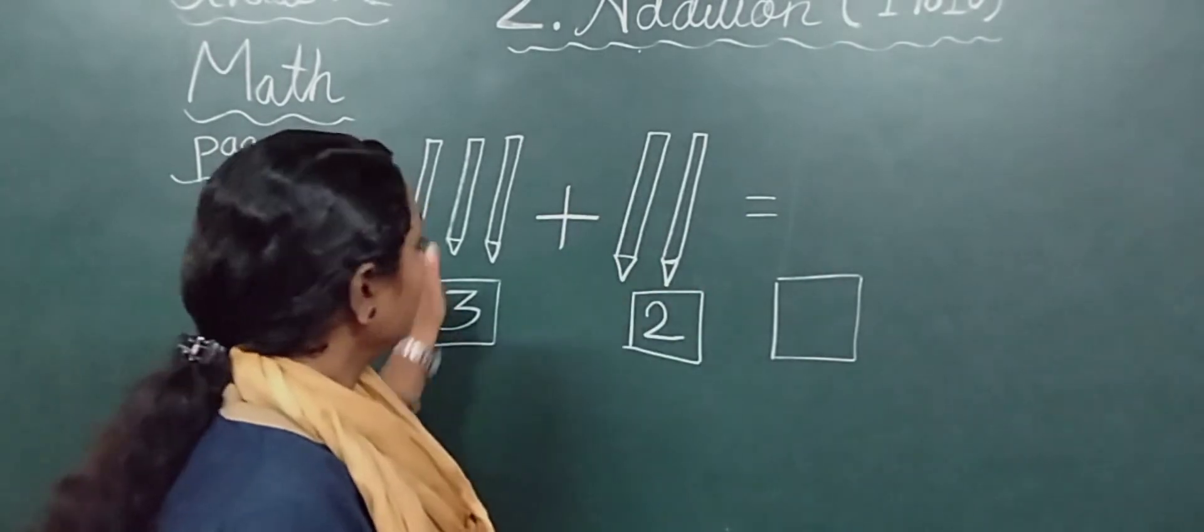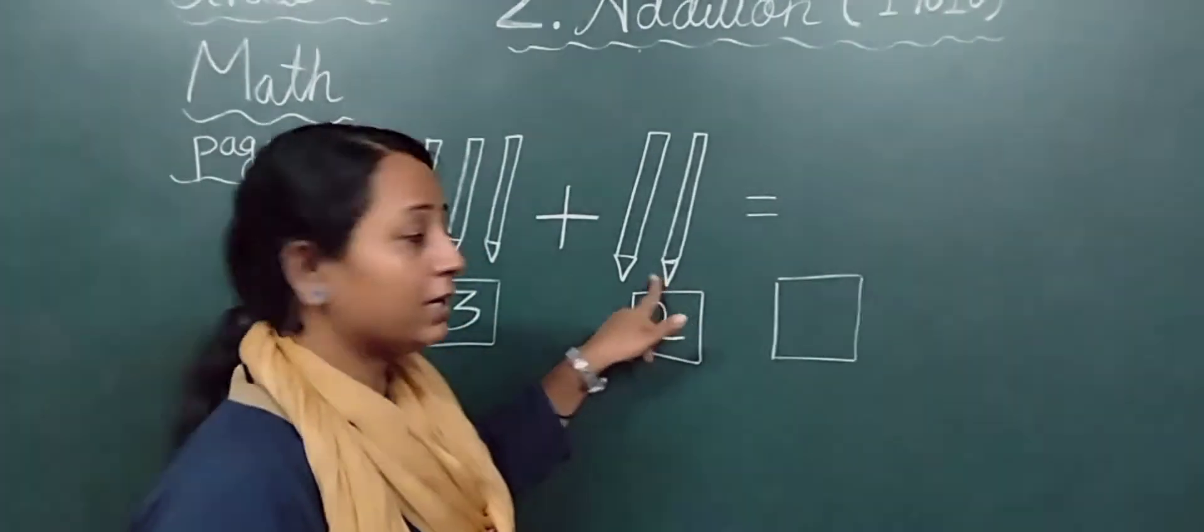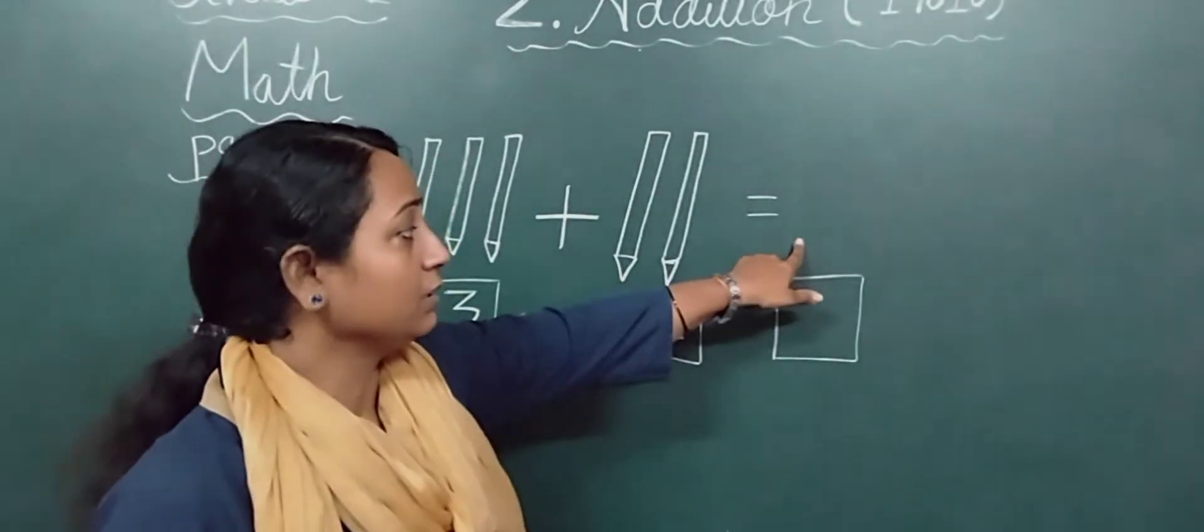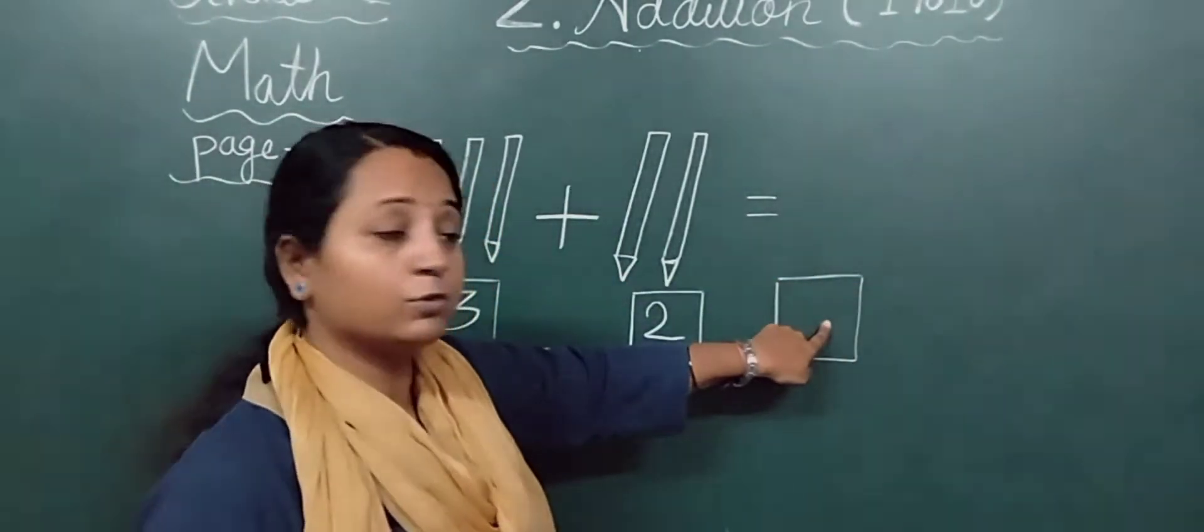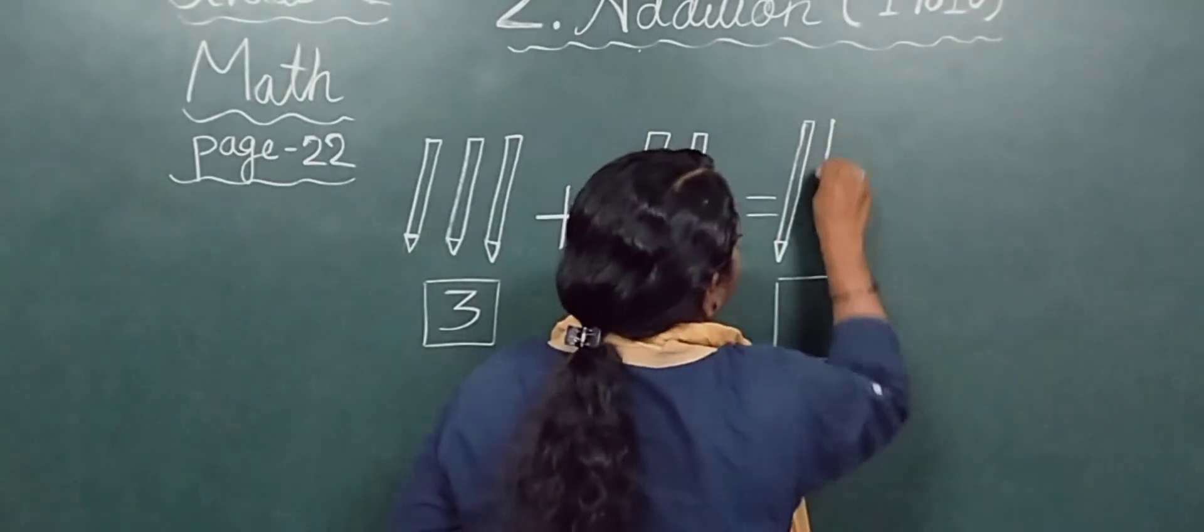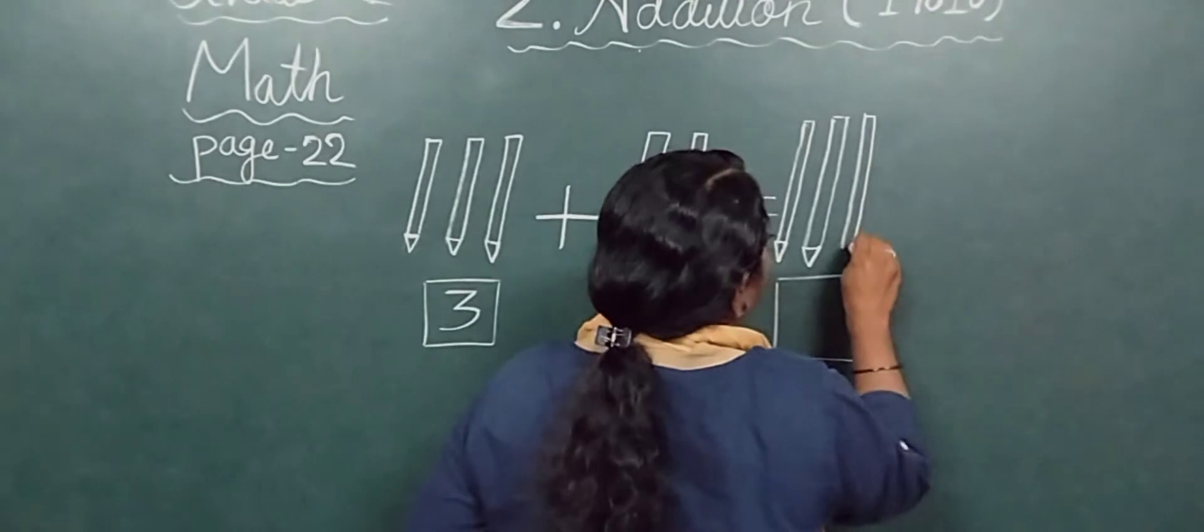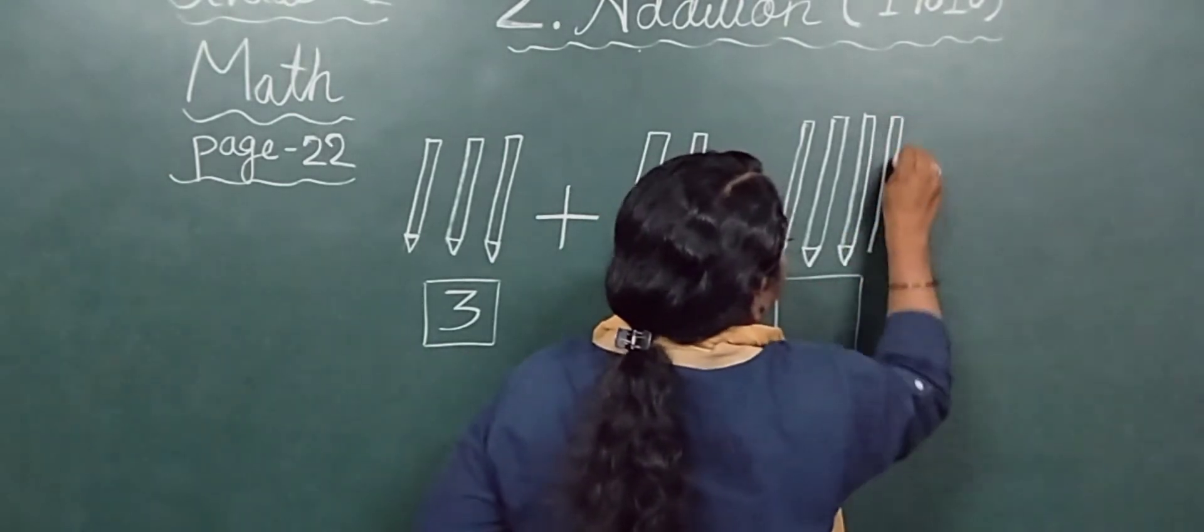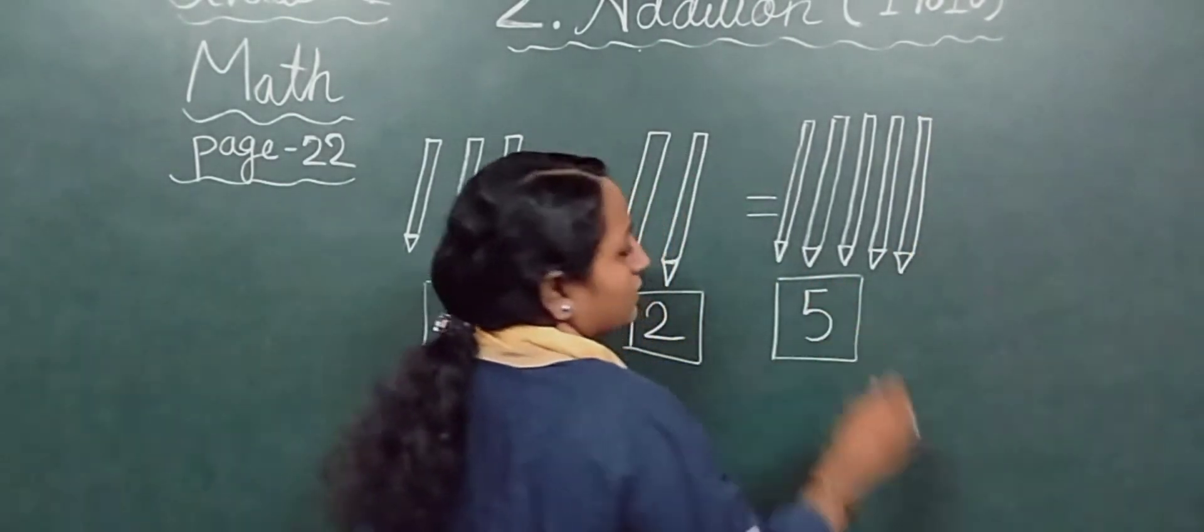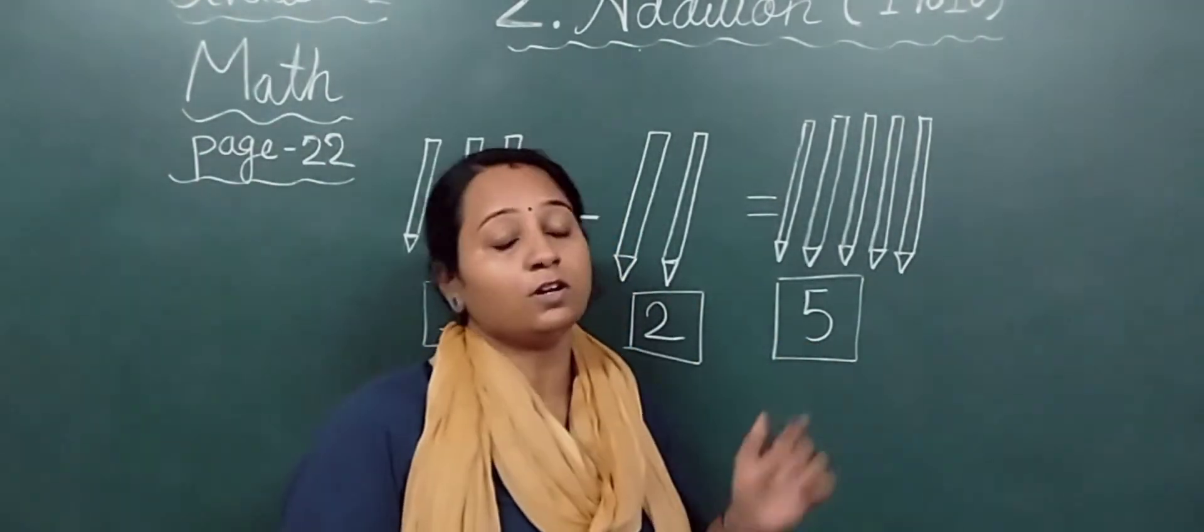Now you have to count all the pencils. 1, 2, 3, 4, 5. We have to count the total. 1, 2, 3, 4, 5. So here I have to draw 5 pencils and here I have to write 5. I will draw 5 pencils: 1, 2, 3, 4, 5. Here I have written 5. So in this way you have to do this exercise in your textbook.